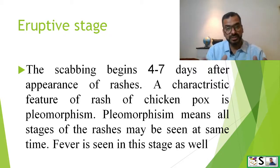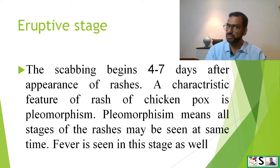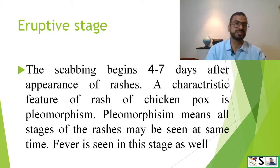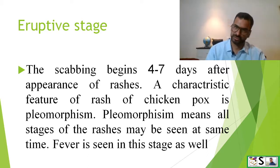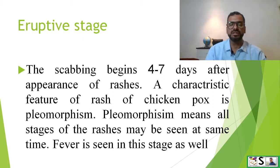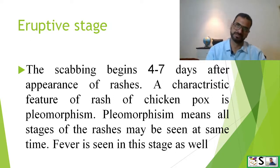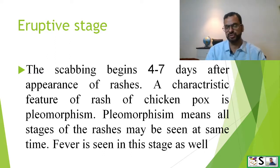Scabbing begins four to seven days after appearance of rashes. A characteristic feature of the rashes of chickenpox is pleomorphism — meaning all stages of rashes may be seen at the same time. Fever is also seen in this stage as well.